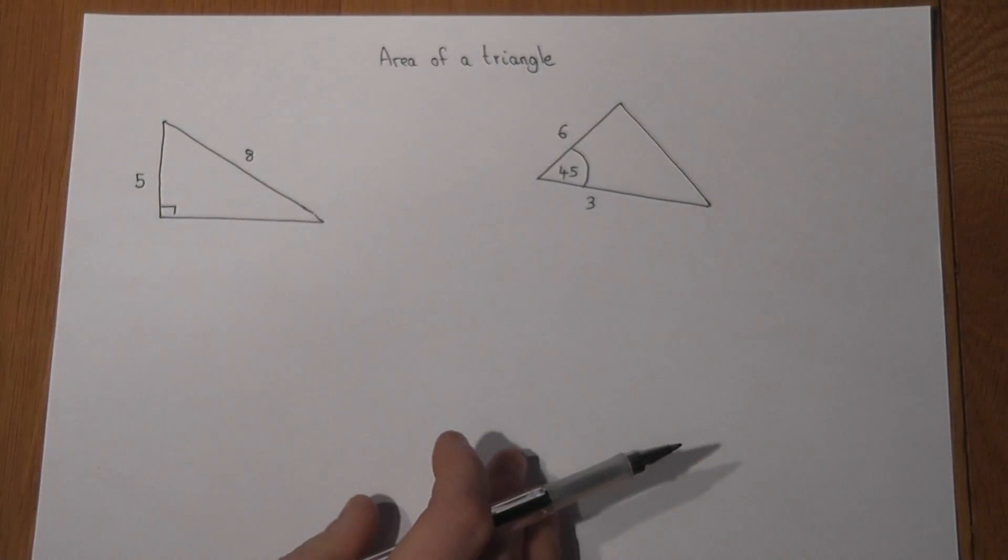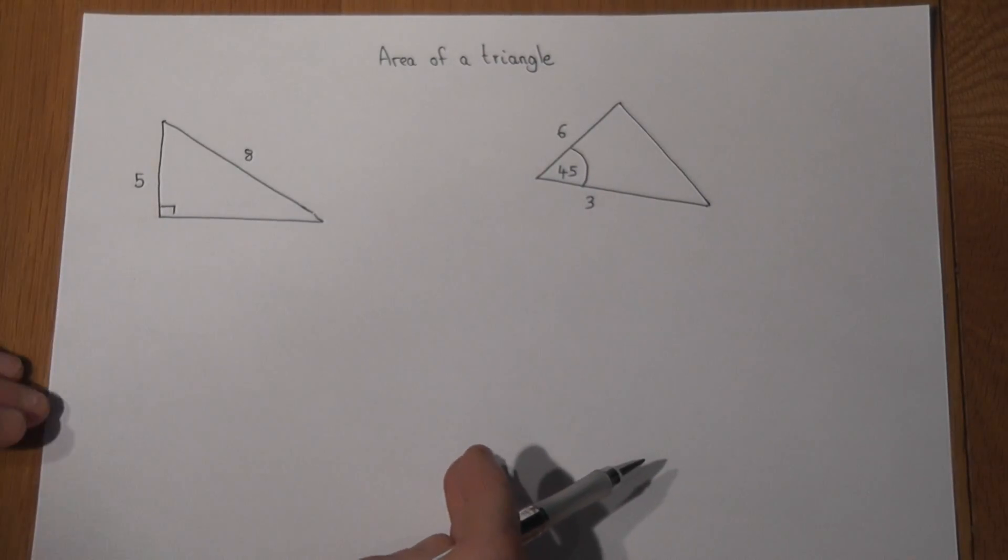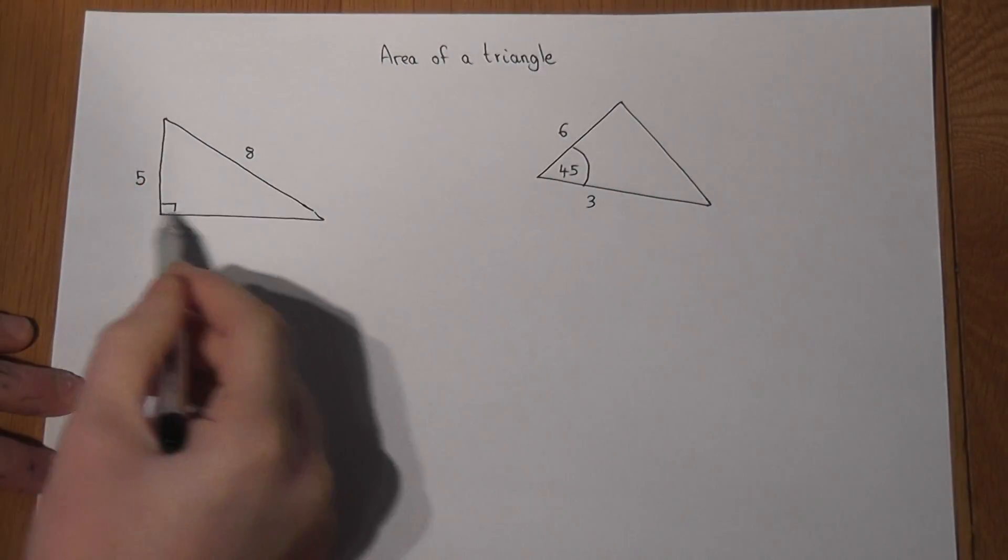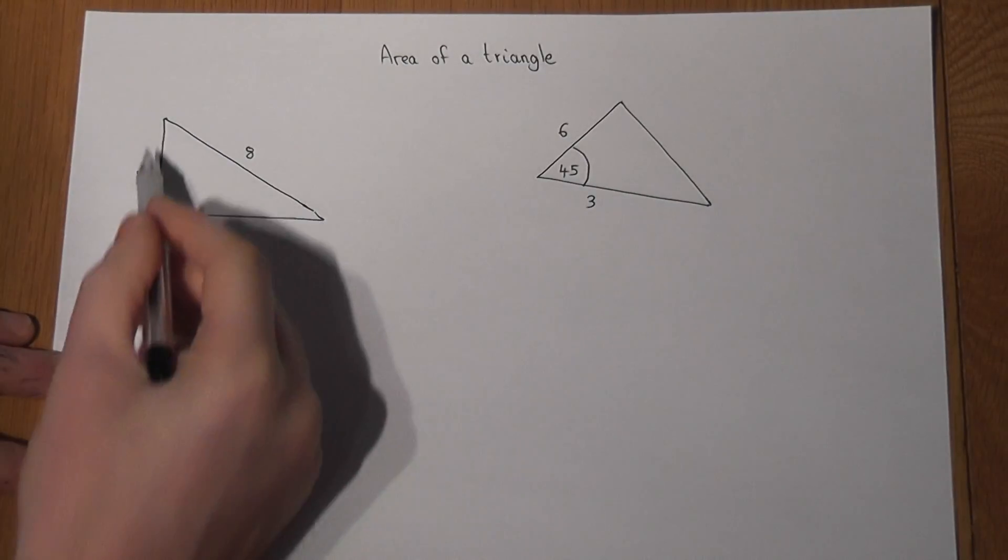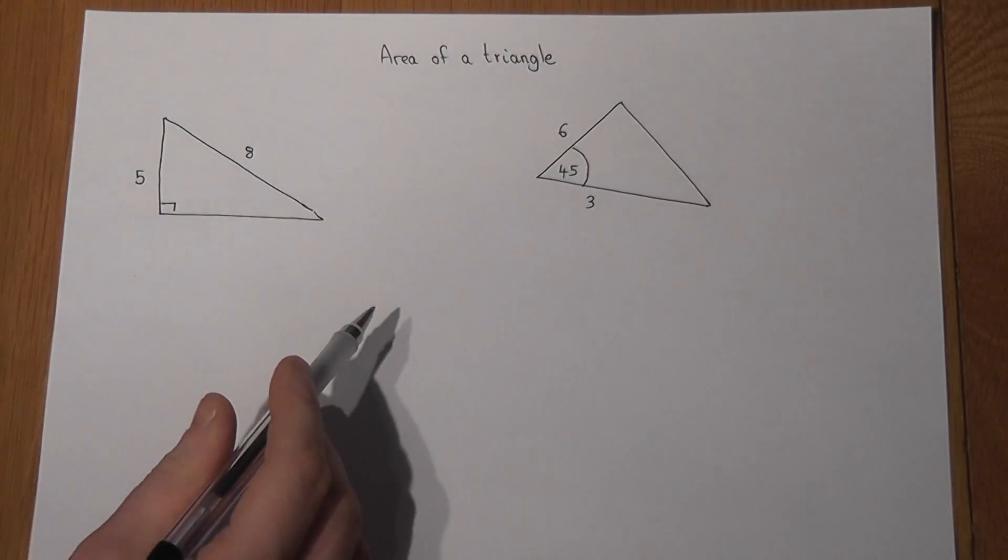This video reviews two slightly more complex examples about finding the area of triangles. Now we do know the area of a triangle is normally just a half base times height. However, in this first problem, whilst we know the height, we've not actually got the base of the triangle.